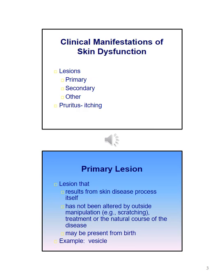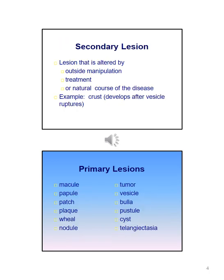The loss of melanocytes in the hair bulbs causes graying, the number of hair follicles start to thin and cause balding, and temperature regulation becomes compromised. Clinical manifestations of skin dysfunctions are lesions, which can be broken down into primary, secondary, and other. Another clinical manifestation is pruritus, which is itching. Primary lesions result from the skin disease process itself and have not been altered by outside manipulation.